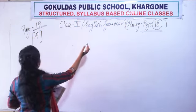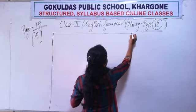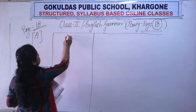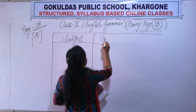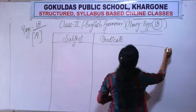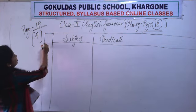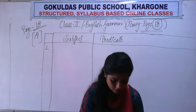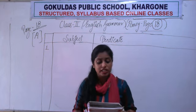Let me make a table for you here, just as it is there in the book. Here we are going to write all the subject parts of the sentence, and here the predicate parts. The first sentence is: I shall not be at home tomorrow.